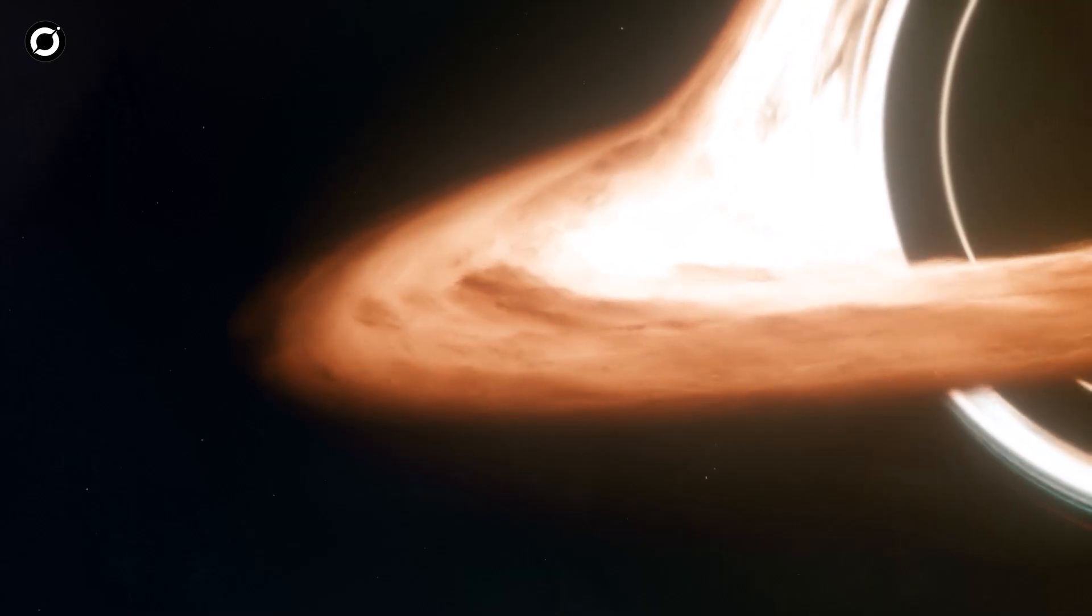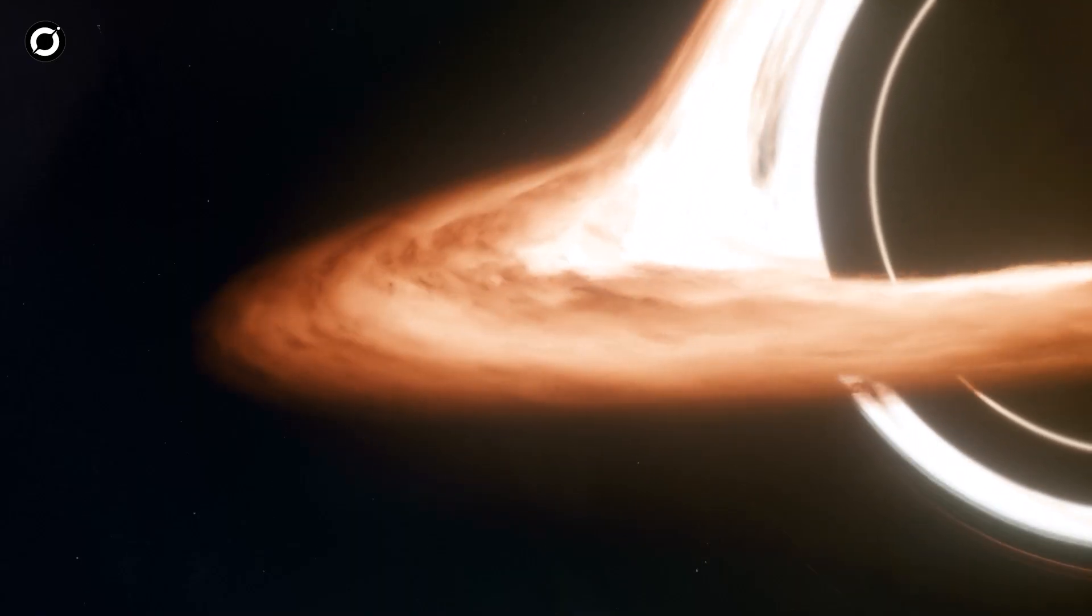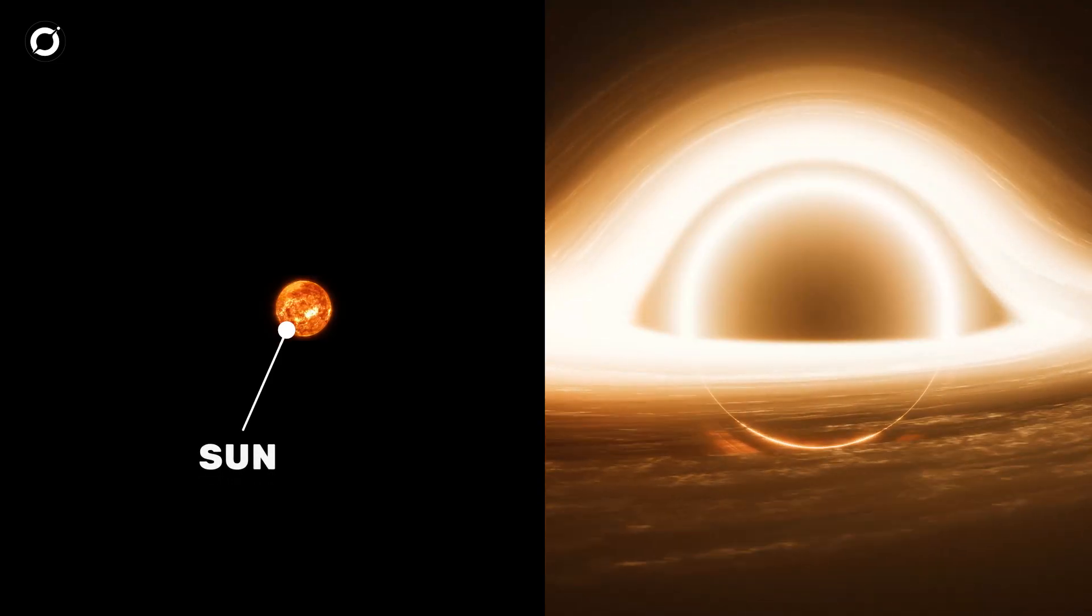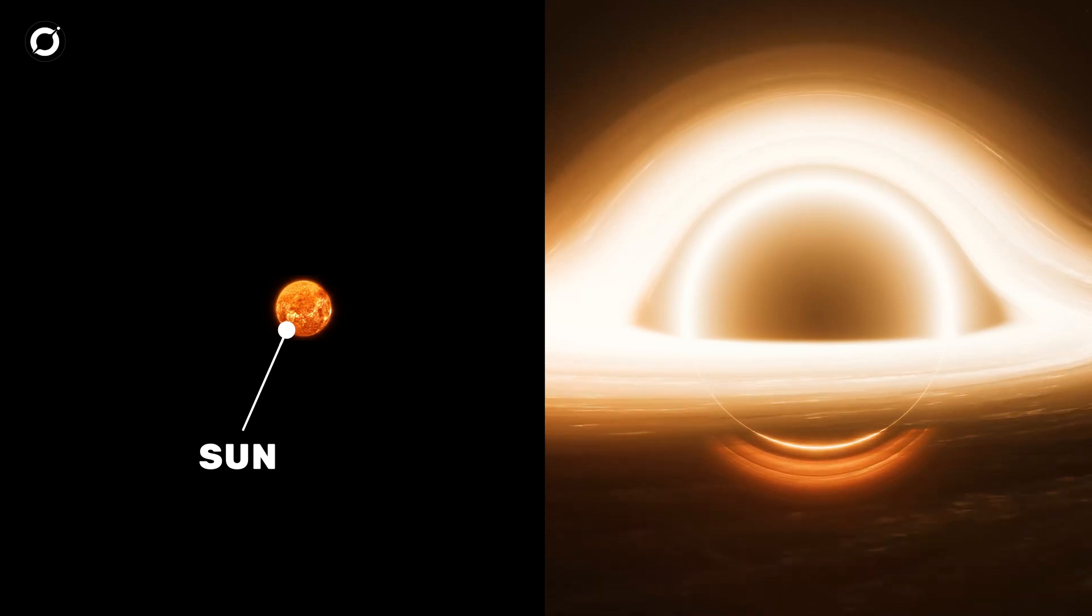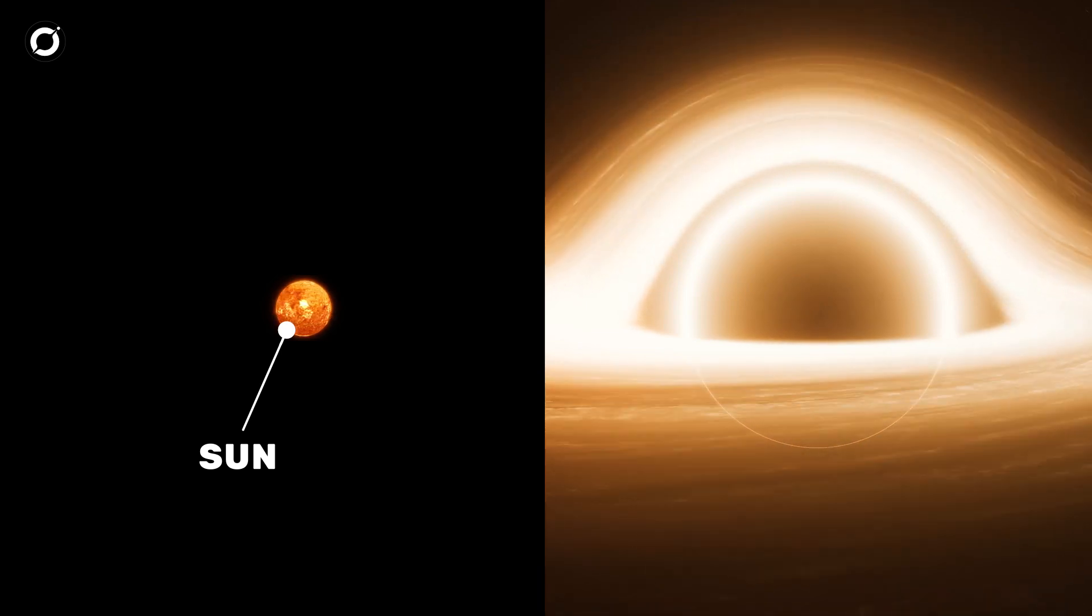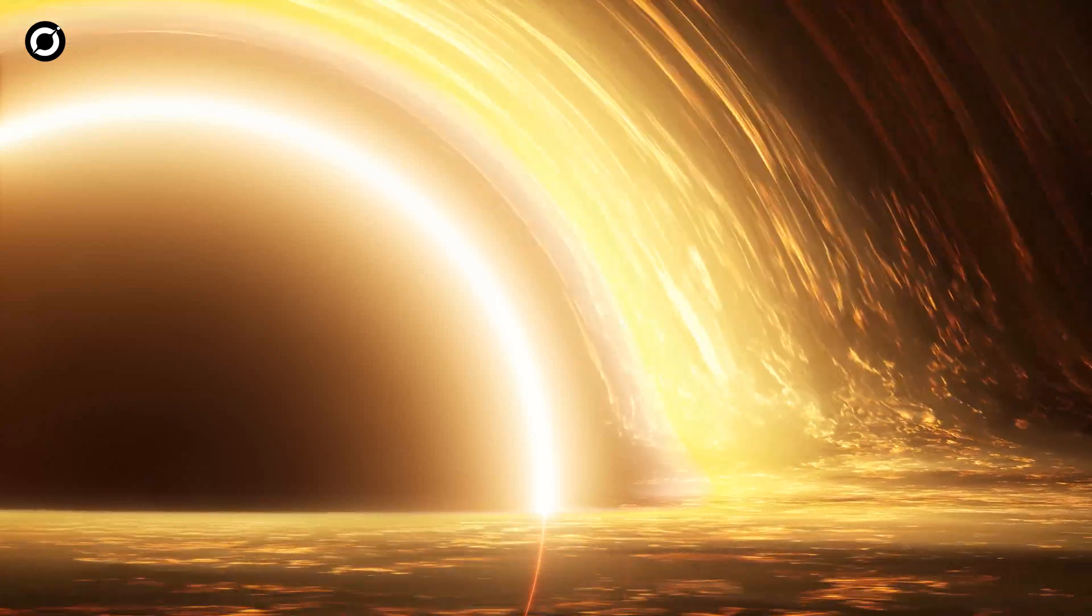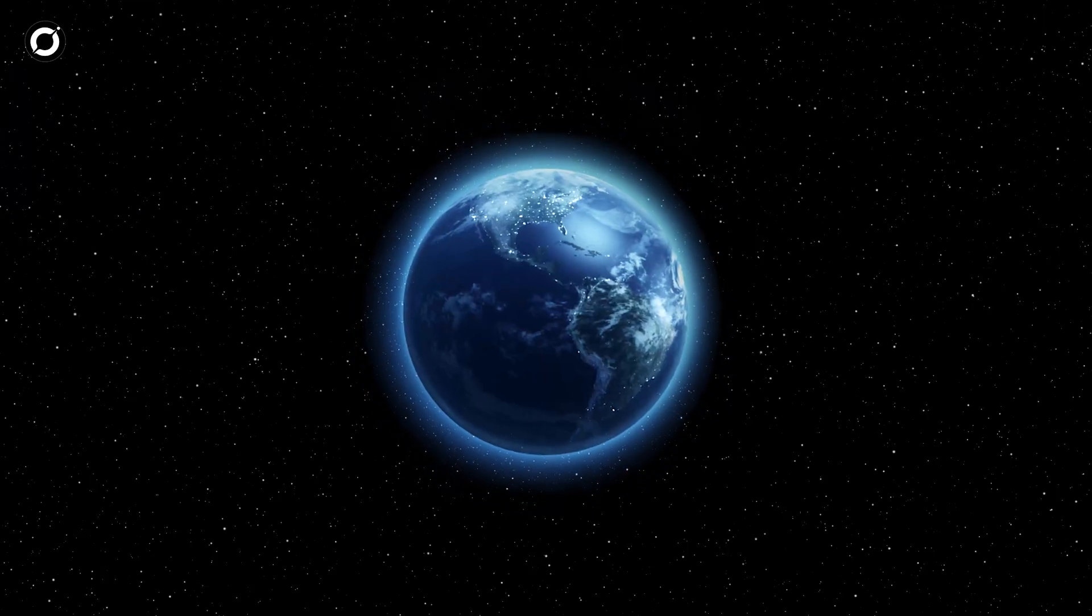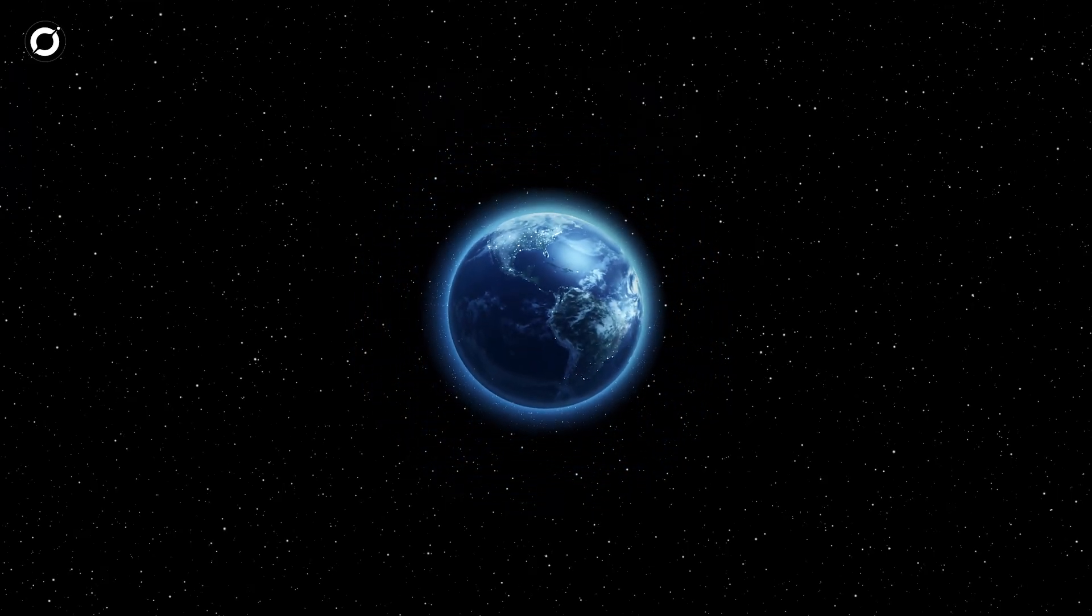The tidal forces from the black hole would become noticeable long before it actually touched Earth. If the black hole were about 10 to 100 times the mass of the Sun, it could tear Earth apart if it came too close. For a supermassive black hole, which is millions to billions of times the mass of the Sun, Earth might be affected even at much greater distances.